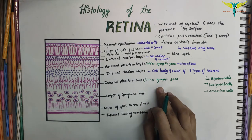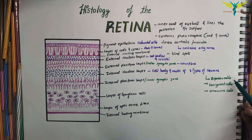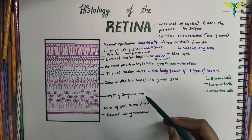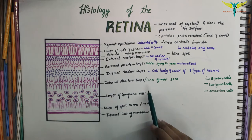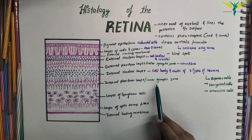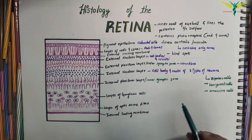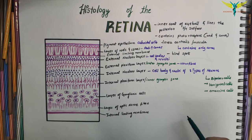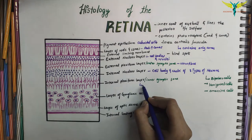The internal plexiform layer is also called the inner synaptic zone. It consists of synapsing nerve fibers, where the axons of the bipolar cells synapse with the dendrites of the ganglion cells. This layer also contains some horizontally placed internal plexiform cells and a few ganglion cells.